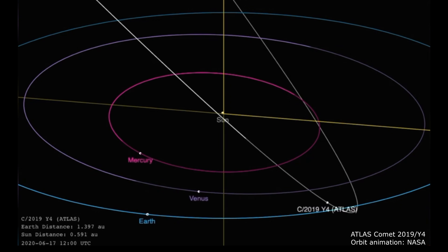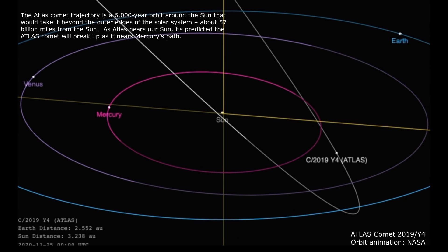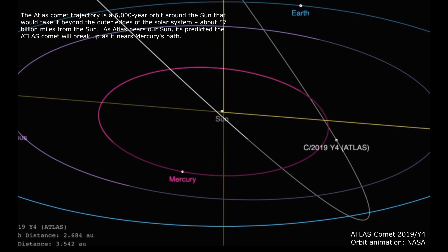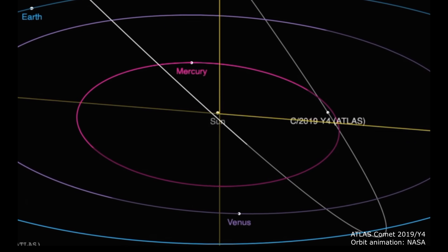The Atlas Comet trajectory is a 6,000 year orbit around the Sun that would take it beyond the outer edges of our solar system, about 57 billion miles from the Sun. As the Atlas nears our Sun, it's predicted the Atlas Comet will break up as it nears Mercury's path.